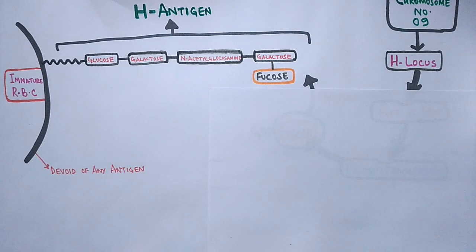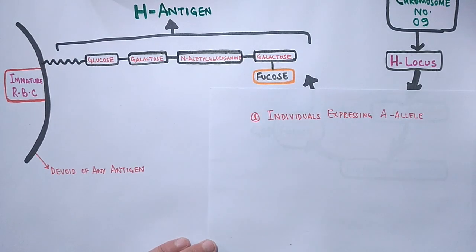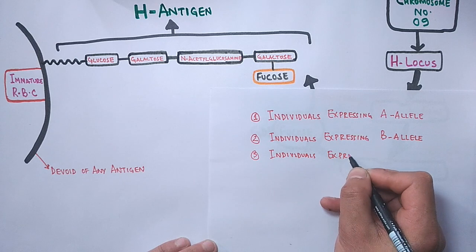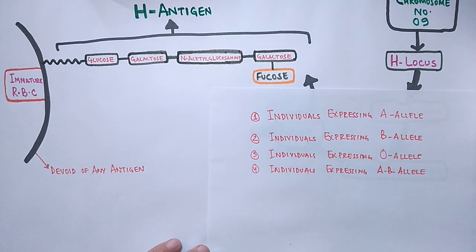Now we have four scenarios here: individuals expressing A allele, individuals expressing B allele, individual expressing O allele in homozygous condition, or individual expressing both A and B allele.